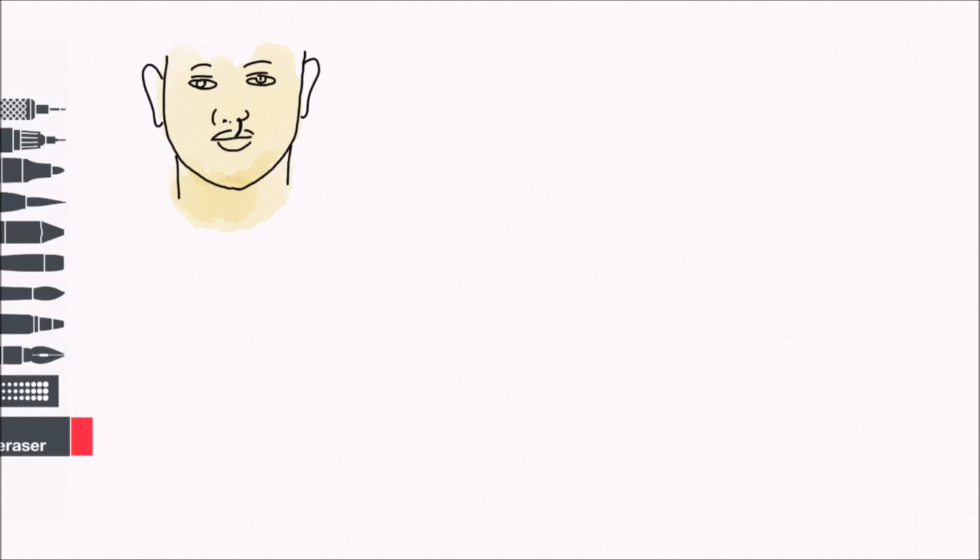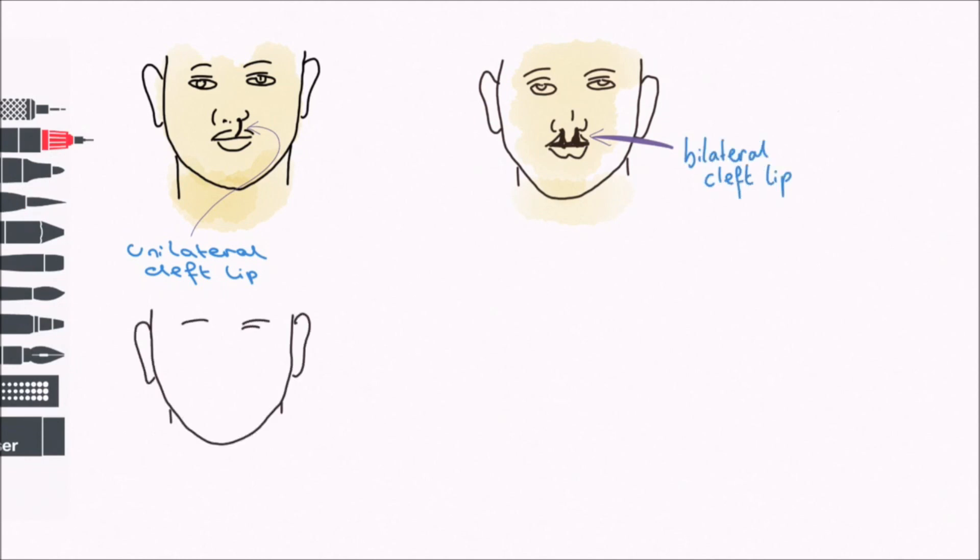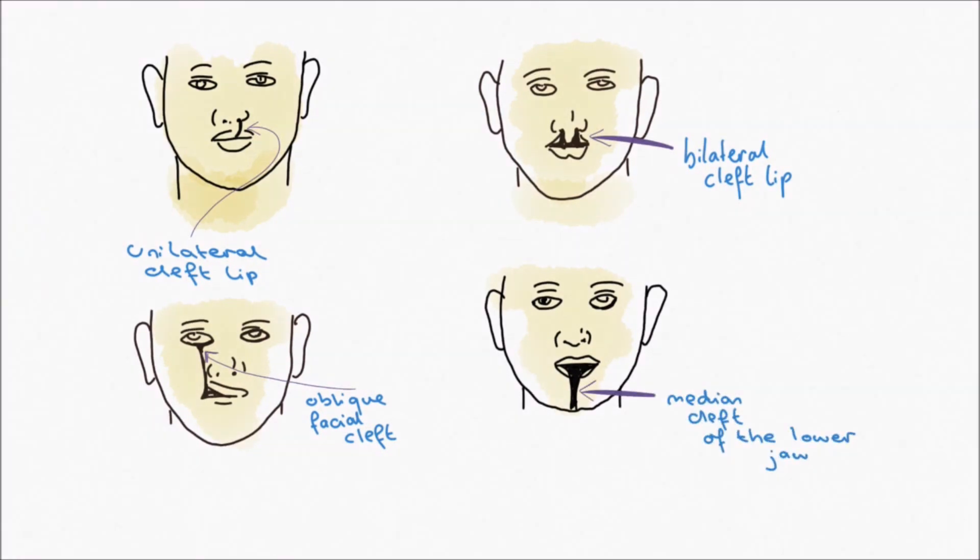Other extremely rare facial clefts may also occur, but these demonstrate the embryology nicely. The first is the unilateral cleft lip. This is due to the failure of the maxillary process on one side to fuse with the median nasal prominence. This can also occur bilaterally. Another facial cleft is the oblique facial cleft. This is where the maxillary process has failed to merge with the lateral nasal prominence, leaving an exposed nasolacrimal groove. A third facial cleft is the median cleft of the lower lip and jaw. This is where the mandibular processes have failed to fuse in the midline.